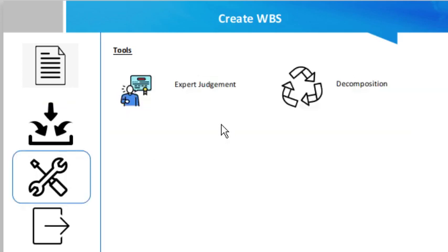Now we talk about the tools for this process. The first tool is expert judgment. To create an effective WBS, expert judgment is always essential because the expertise of experts is used to analyze the information needed to decompose the project deliverables into smaller parts. Such analysis and expertise is applied to the technical details of the project scope and used to reconcile differences in opinion on how to best break down the overall scope of the project.